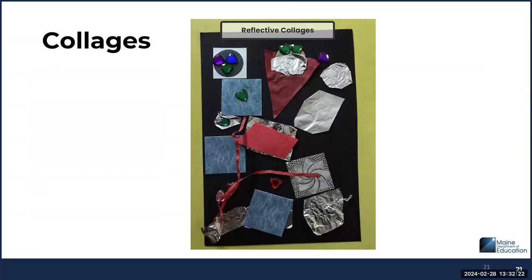Two types of collages are created in this unit. Reflective collages connect to Play With Me, Raccoon on His Own, and Kitten's First Full Moon. Compare and contrast reflective and non-reflective, shiny and dull surfaces when students are creating. Stained glass collages are also created, with connections to Let's Find Out About It — compare and contrast the collages, look for shapes within them, and write and dictate about the collages created. Students' collages can also be used as backdrops in centers such as the block center or dramatization.